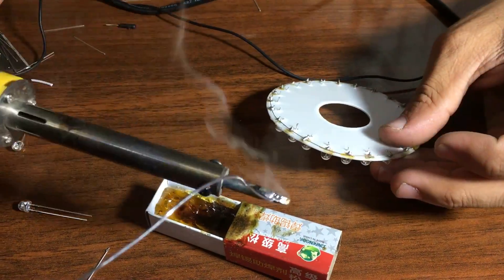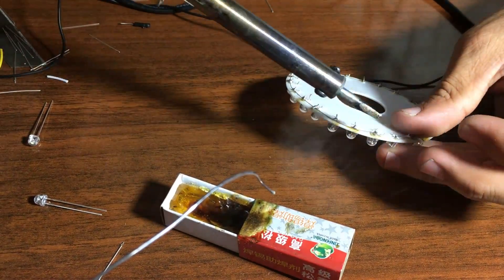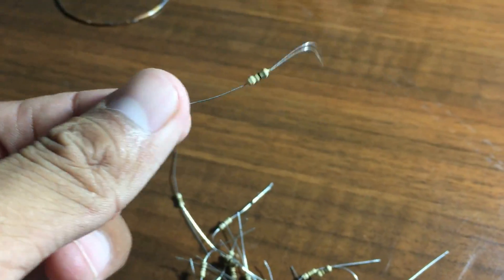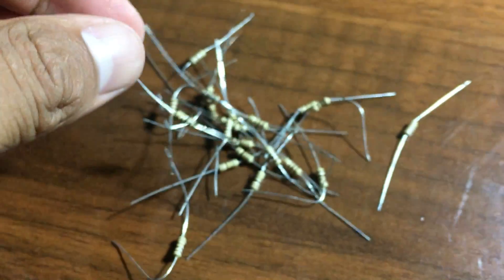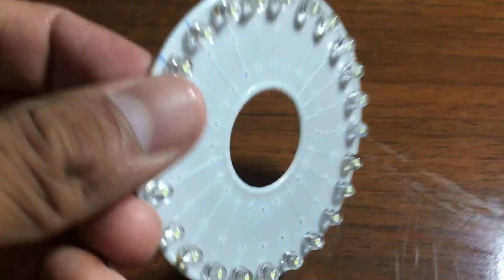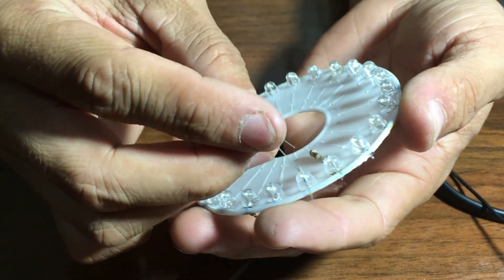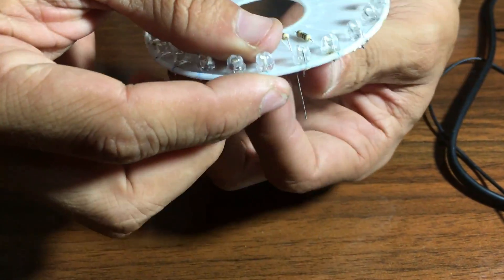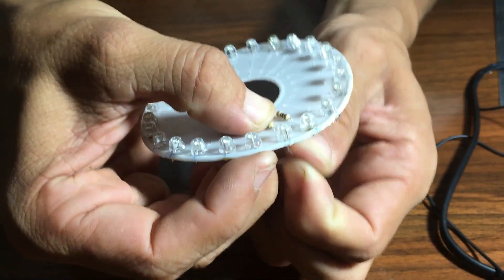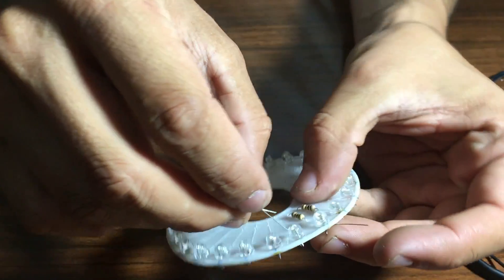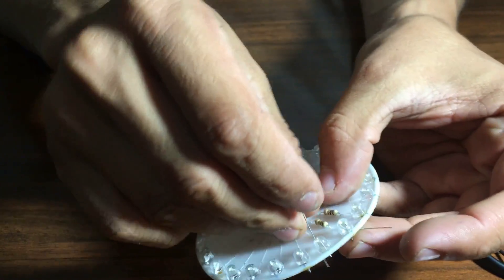Once we are done with the connection of the minus poles of the LEDs, now it's time to connect all the resistors. Actually here we are using resistors in order to protect LEDs from burning because these LEDs require 3.3 volts to function but the source here in our case is 5 volts. That's why we have to use resistors - one single resistor will be used for each LED.